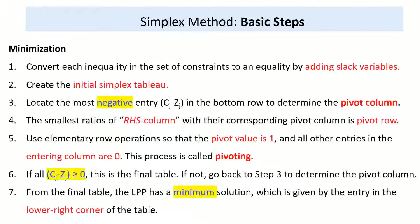The first step in Minimization is to convert each inequality in the set of constraints to equality by adding slack variables. We can add surplus variables if the inequality is greater than or equal to, or slack variables if it is less than or equal to. The second step is to create an initial Simplex Tableau. These two steps work for both maximization and minimization.